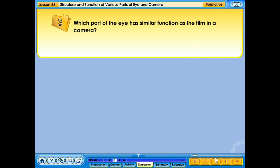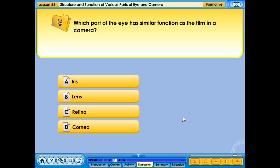Which part of the eye has similar function as the film in a camera? A. Iris. B. Lens. C. Retina. D. Cornea. Your answer is correct.